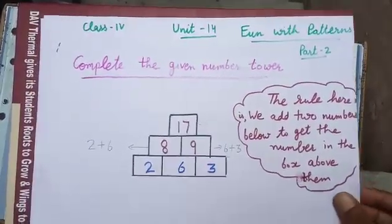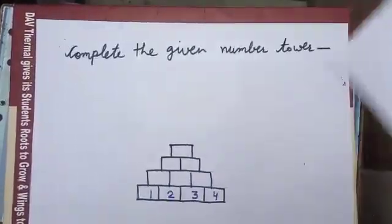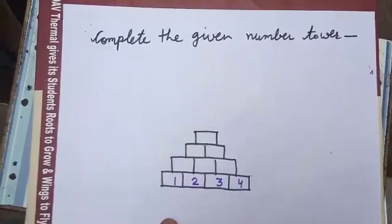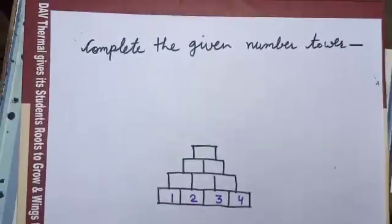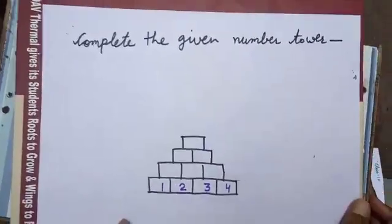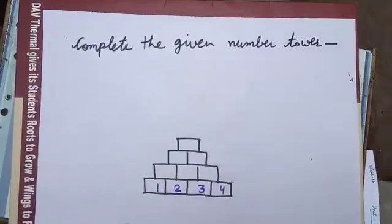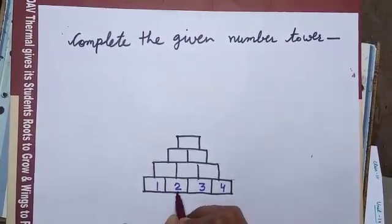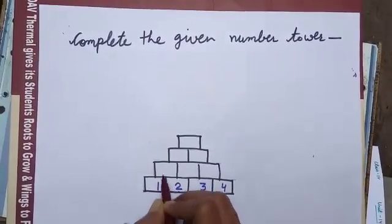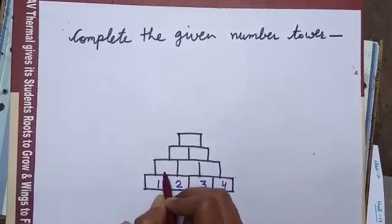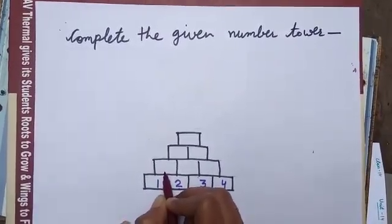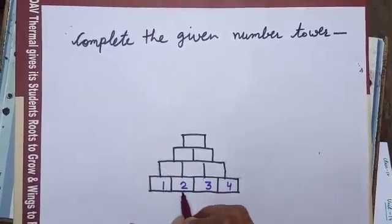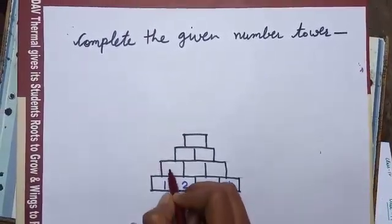Let us take one more example. Now to complete this number tower, firstly I will add 1 and 2 to get the number in the box just above. 1 plus 2, 3.